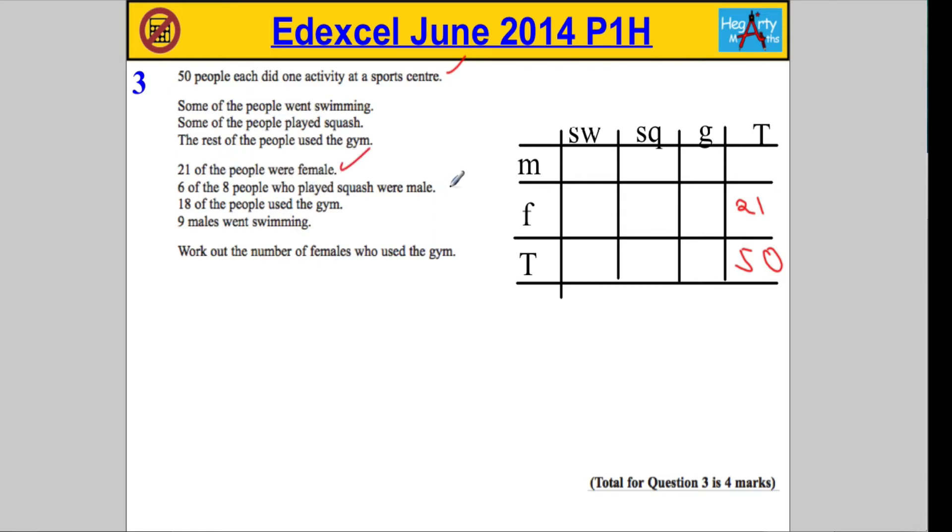Six of the eight people who played squash were males. We've got two pieces of information here. We know eight people played squash, because it says six of the eight who played squash. So six of the eight, eight people played squash. So let's fill that in here. We know we have a total of eight people that played squash, and we know that six of them were males. Now, I'm not going to fill anything in yet until we take all the information from the question. 18 of the people used the gym. So scrolling along, I see this is the gym here, and I know 18 people used the gym. So the total for the gym, clearly 18. And it says that nine males went swimming. So we got males swimming. There must be nine of them. Tick that off.